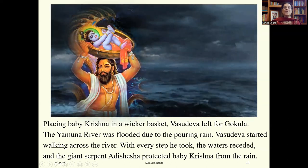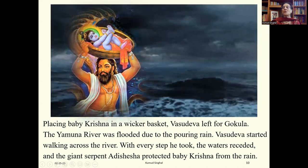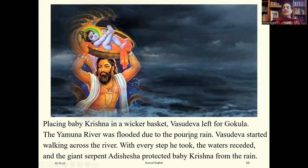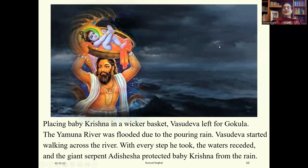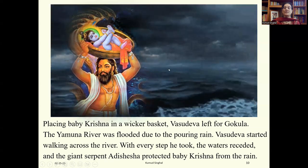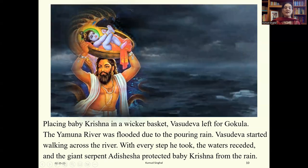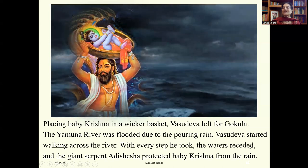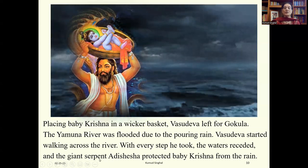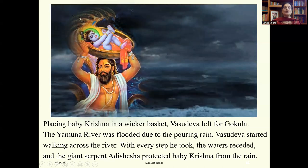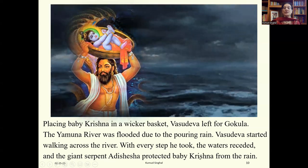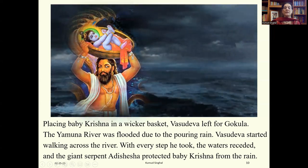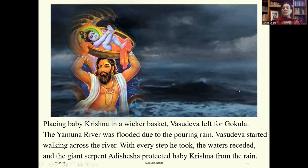Placing baby Krishna in a wicker basket, Vasudeva left for Gokul. The Yamuna river was flooded due to the pouring rain — it was a dark and stormy night. Vasudeva started walking across the river, and with every step he took the waters receded. The giant serpent Adhi Shesha protected baby Krishna from the rain, and Vasudeva slowly crossed the Yamuna river.